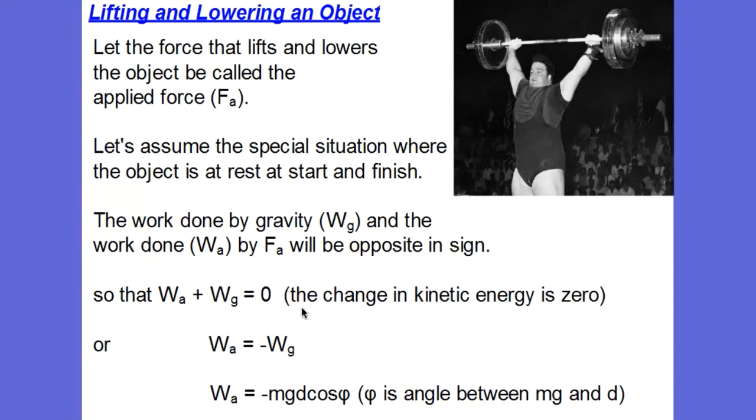And if we're saying that it started at rest and ends at rest, then I know that the change in kinetic energy is zero. Because change in kinetic energy is equal to the amount of work. So the work done by the applied force plus the work done by the gravitational force add to zero. And in other words, they are equal and opposite. So we can rewrite this as the work done by the applied force is equal to the opposite of the work done by the gravitational force, where the work done by the gravitational force is the magnitude of the force, the weight times the displacement times the cosine of the angle between them.